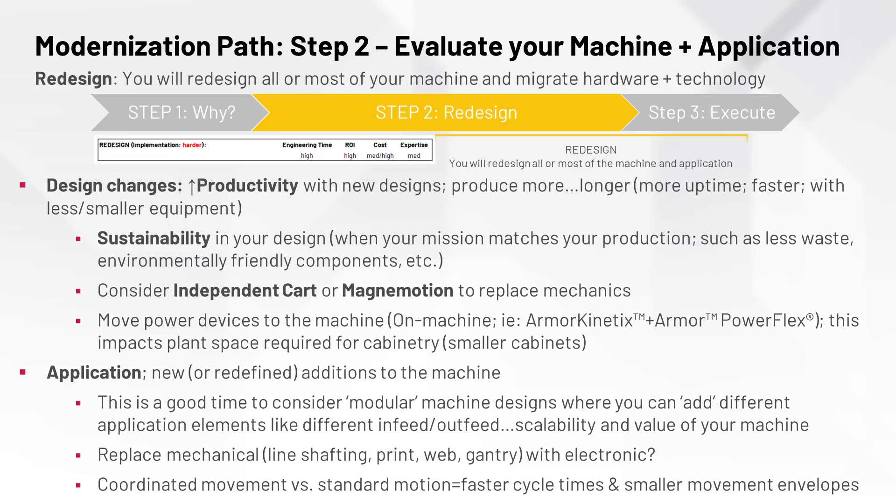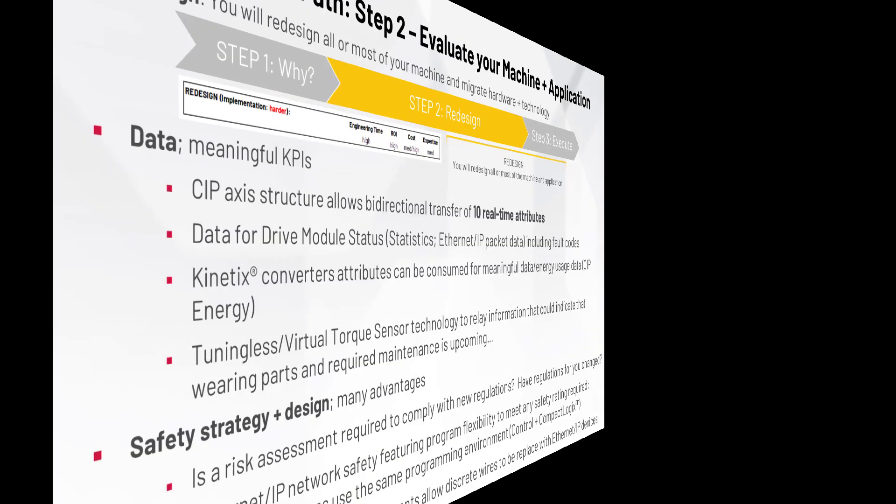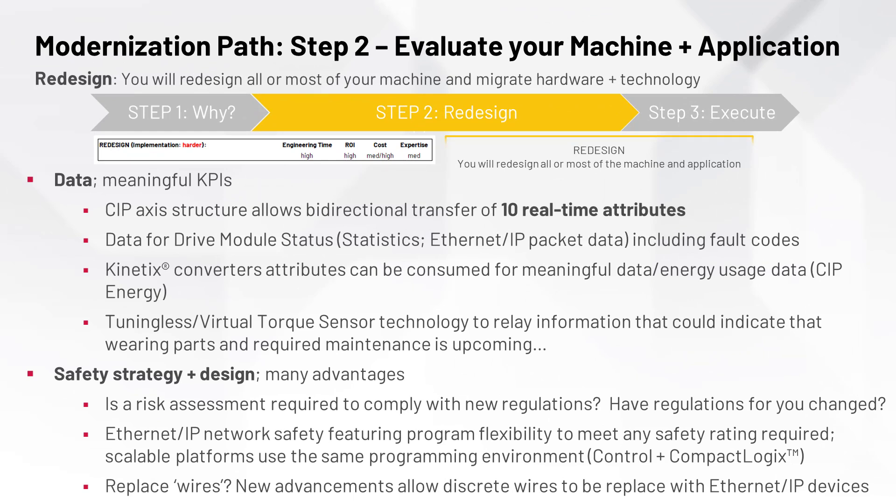Application design changes: can your machine become more modular? Can you attach your new machine design to another extension in the plant? Can you change some mechanical components with electrical versions? This means better uptime and higher productivity. Using new technology opens the door to meaningful data that can improve your machine's efficiency, and predictive data that can help diagnose when something is worn or even broken.